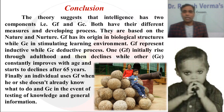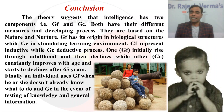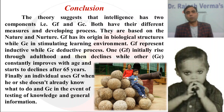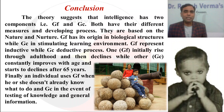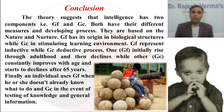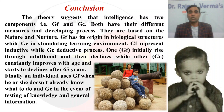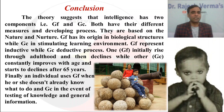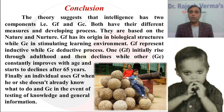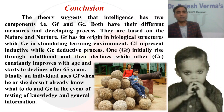To conclude, Cattell and Horn's theory of intelligence suggests that intelligence has two major components: GF (fluid intelligence) and GC (crystallized intelligence). Both have different measures and developmental patterns. They are based on nature and nurture — nature meaning genetically defined, nurture meaning your immediate environment. GF has its origin in biological structures, while GC in stimulating learning environments. GF represents inductive processes while GC represents deductive processes. GF initially rises then declines, while GC constantly improves with age and starts declining after 65 years.